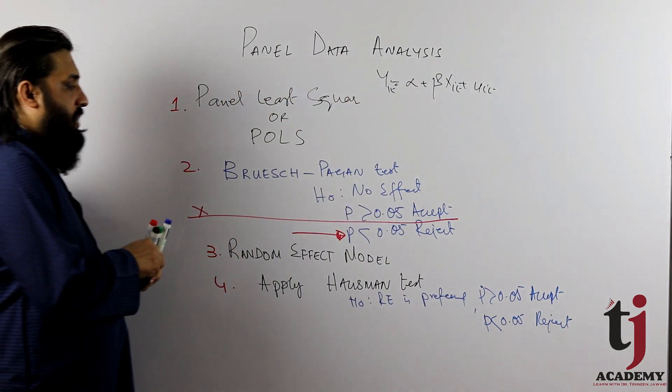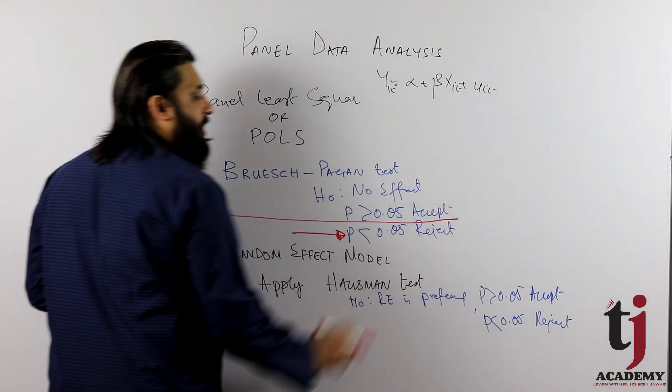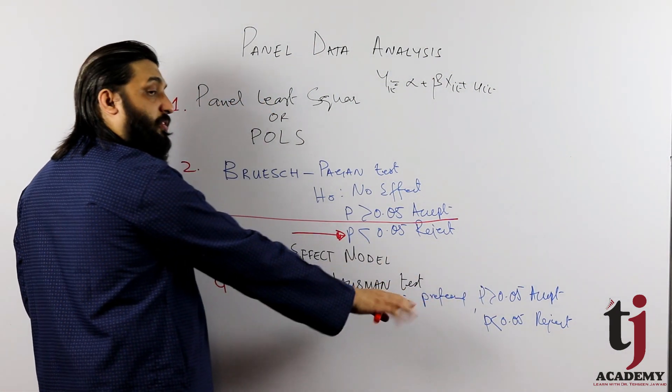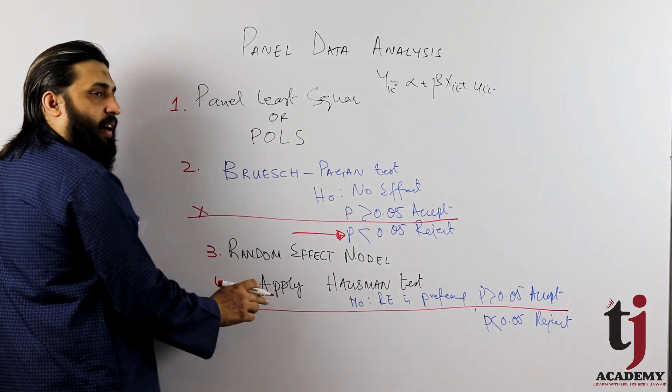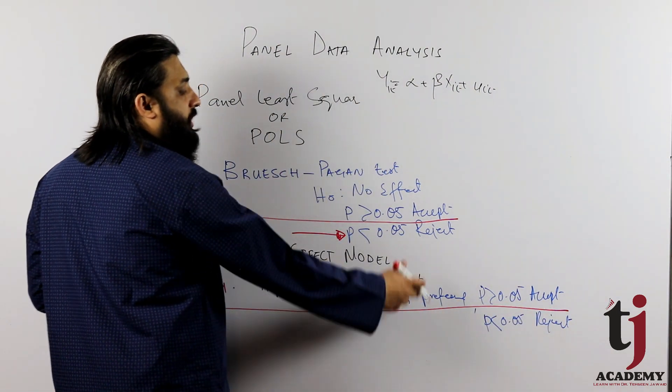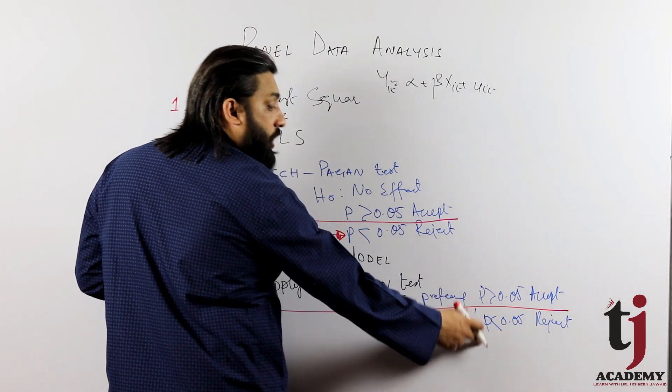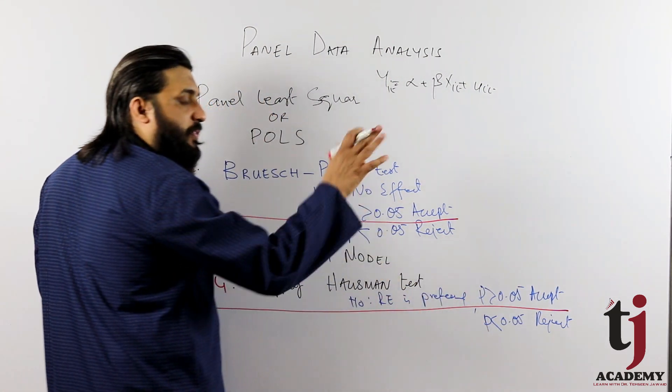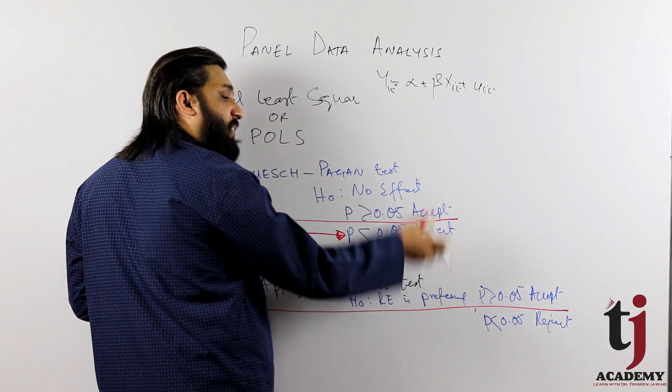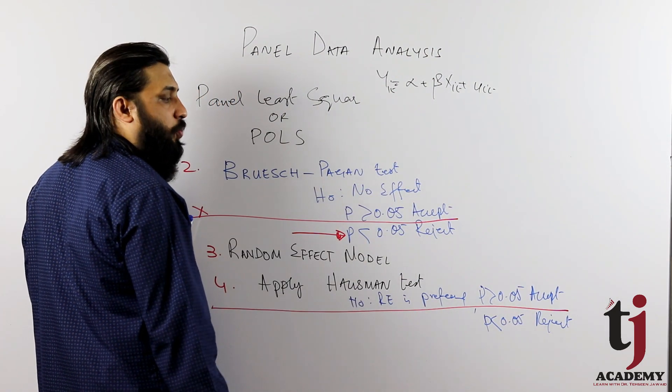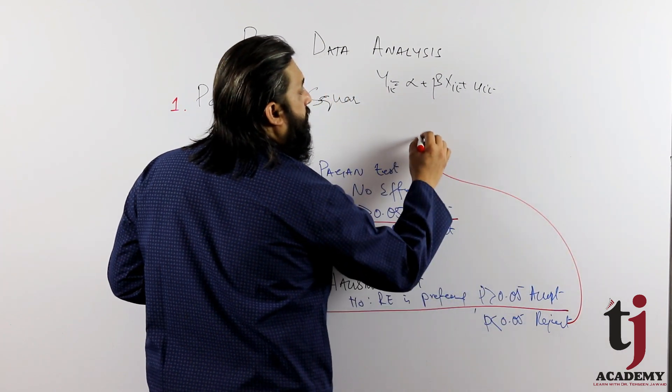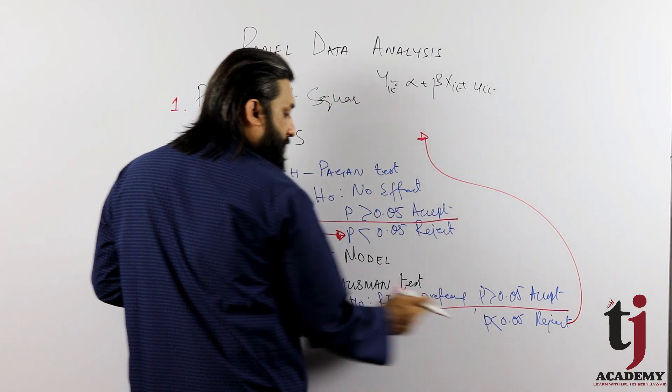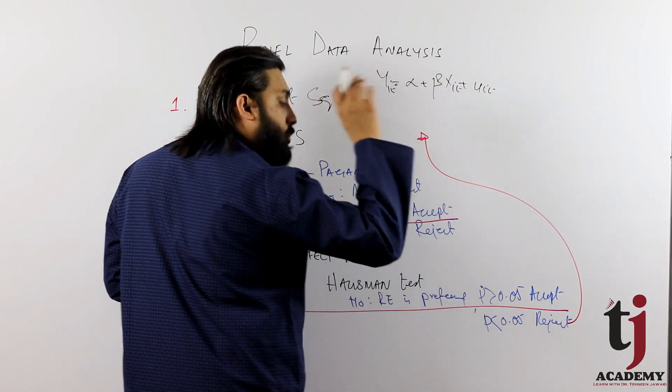less than 0.05, then reject. If this p-value greater than 0.05, is preferred, accept. Then random effect run. But if this reject, is not. So if it is